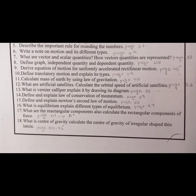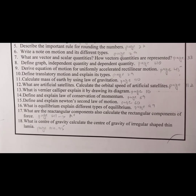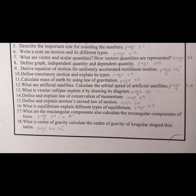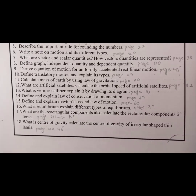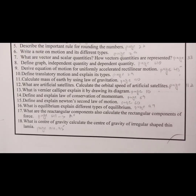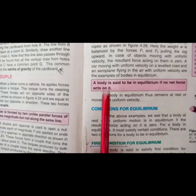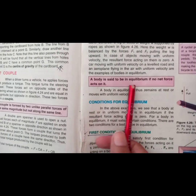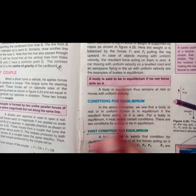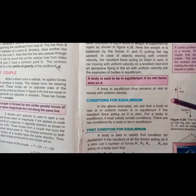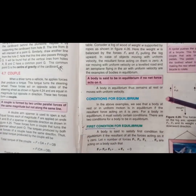Question number 16: what is equilibrium? Explain the different types of equilibrium. Open up page number 97 of your textbook. A body is said to be in equilibrium if no net force acts on it. There are three types of equilibrium: the first one is stable, unstable, and neutral.